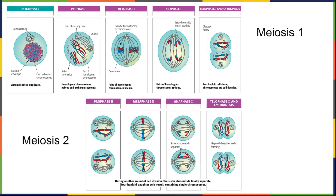Let's look at meiosis and understand all of the different stages and steps, which will help us understand why there's so much diversity at the end of meiosis. Meiosis can largely be broken up into two different stages: meiosis one and meiosis two. Each stage results in a cell division, so while mitosis ends with two cells from one, meiosis ends with four cells from one.